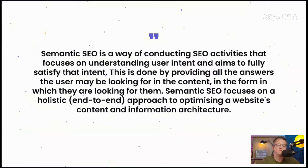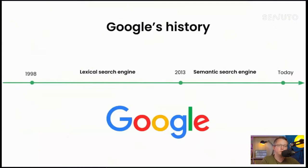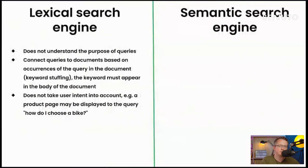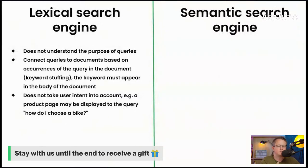To understand semantic SEO we need to understand the story of Google. Google was founded in 1998 and until 2013 we could classify it as a lexical search engine; after 2013 it became a semantic search engine. A lexical search engine does not understand the purpose of queries, connects queries to documents based on occurrences of the query keyword in the document — what we know as keyword stuffing — and does not take user intent into account. For example, a product page might be displayed for the query 'how do I choose a bike.'